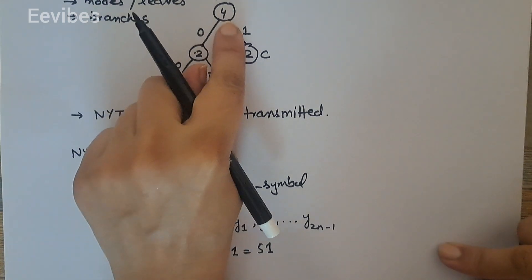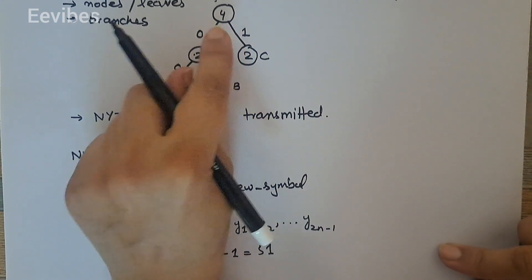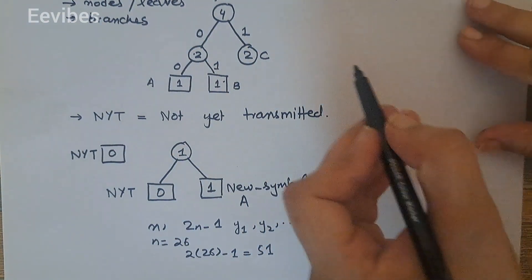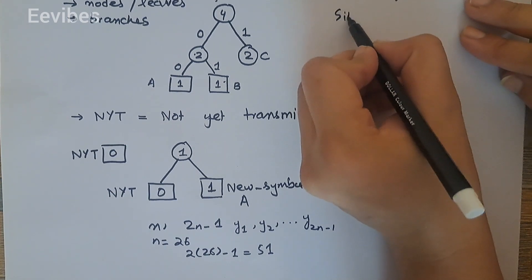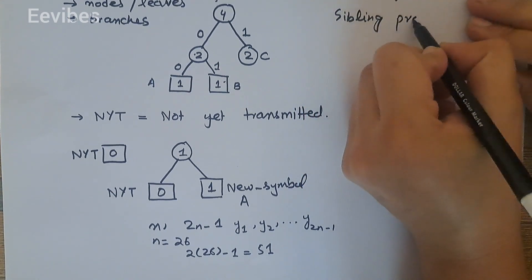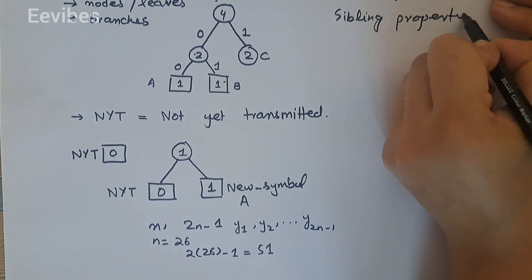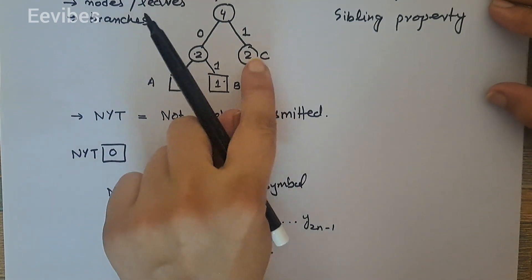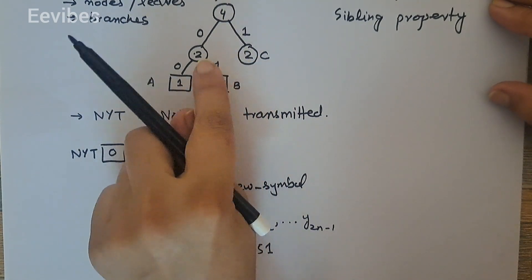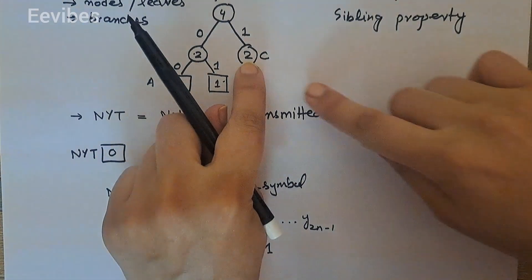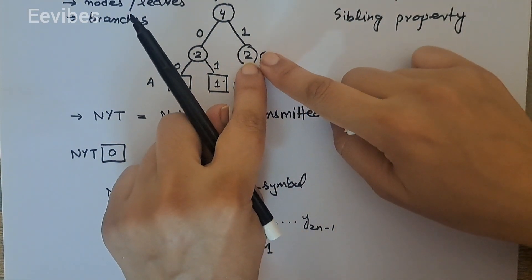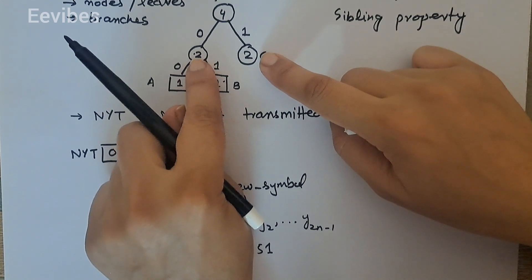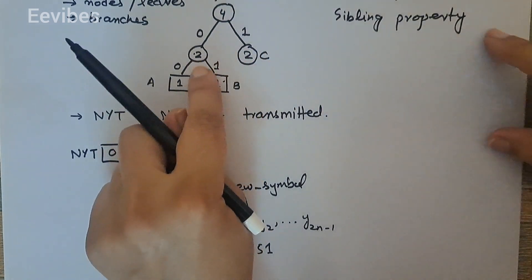In the adaptive Huffman coding there is a property called the sibling property. The sibling property says that two siblings can have either the same value, or the right-hand sibling's weight should be greater than the left-hand sibling's weight. If this is not satisfied, you will have to switch positions.